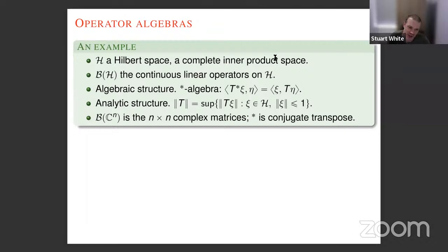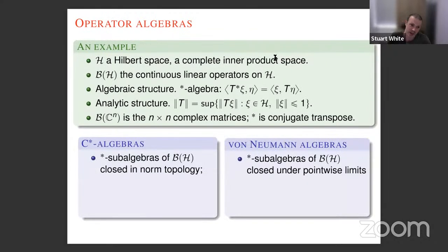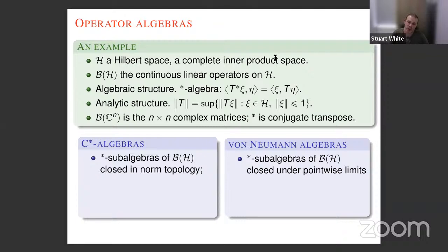The interplay between the analysis and the algebra is given by the C*-identity: the norm of T*T equals the norm of T squared. That gives so much rigidity to the class of operator algebras. For example, if the space is C^n you're working with n×n complex matrices where the star is the conjugate transpose. We define our operator algebras as substructures of B(H): C*-algebras are the star-subalgebras closed in the operator norm, whereas von Neumann algebras are closed under pointwise limits in the strong operator topology.